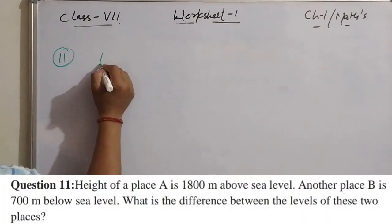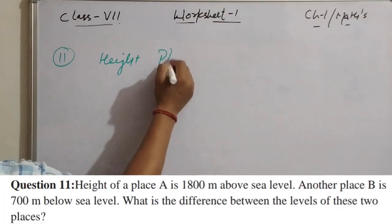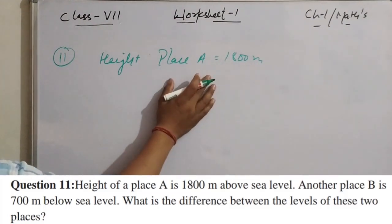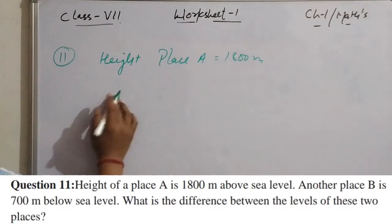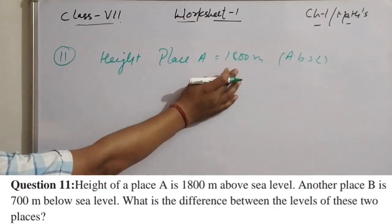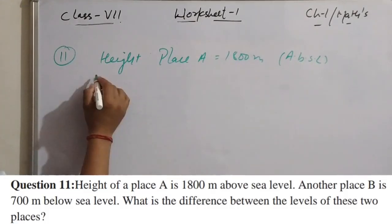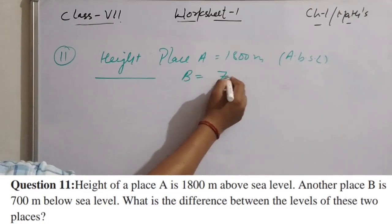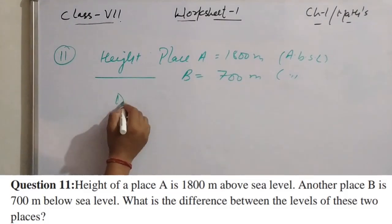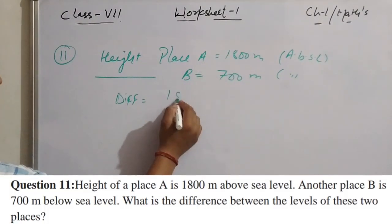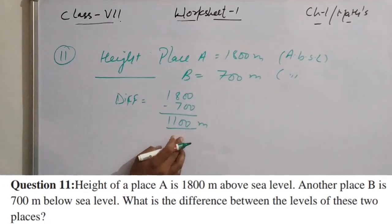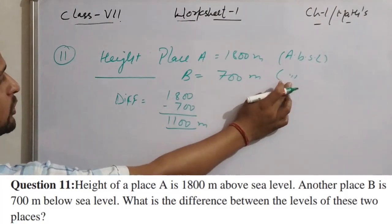Question 11: The height of place A is 1,800 meters above sea level — above sea level is positive. Place B is 100 meters below sea level — below sea level is negative. The height of another location is 700 meters above sea level.